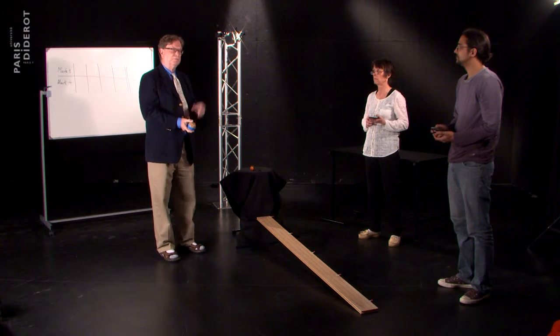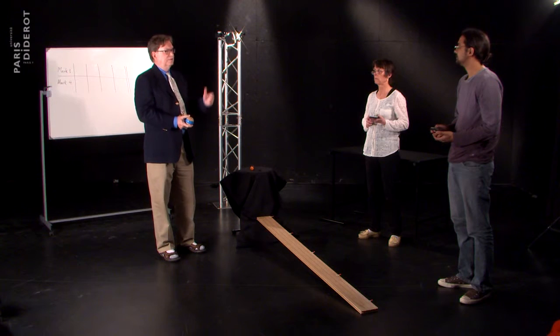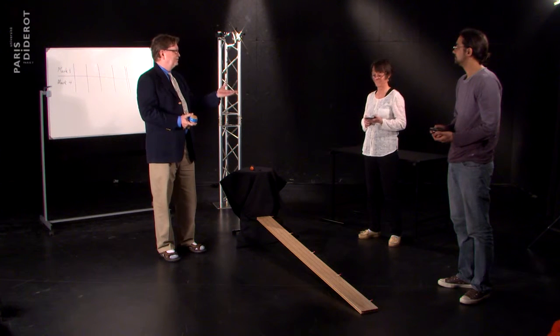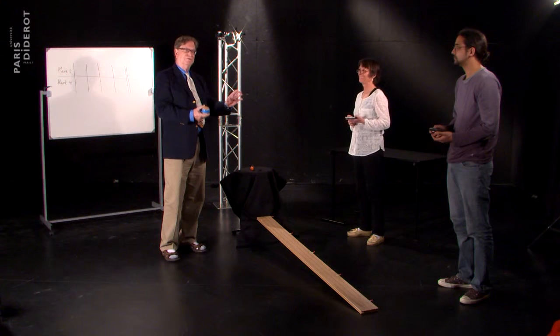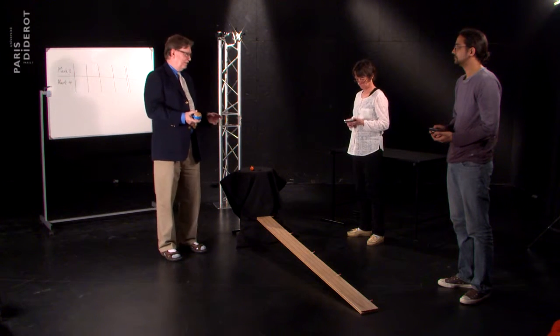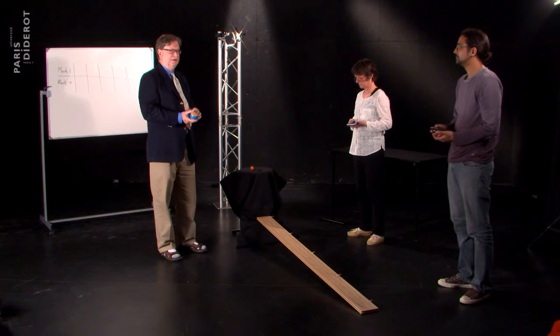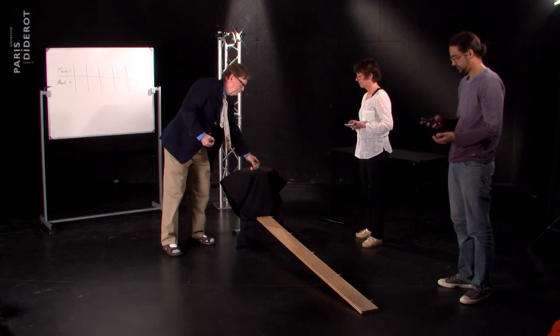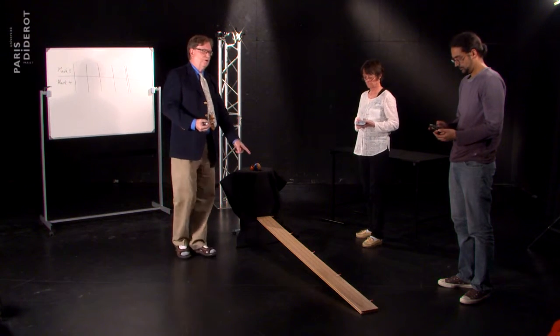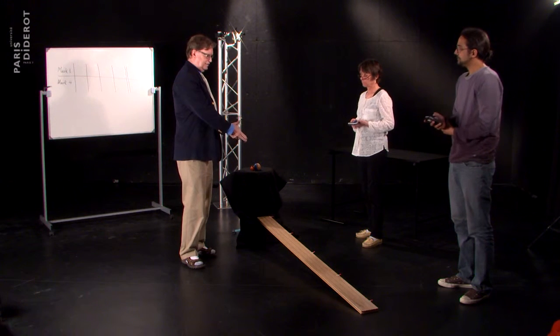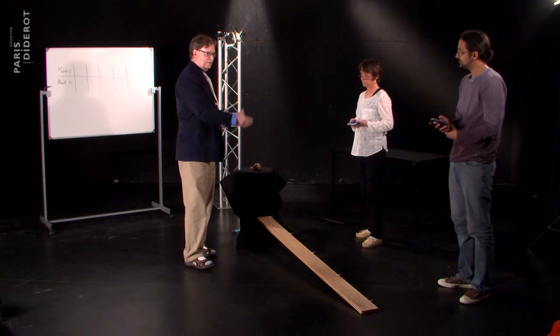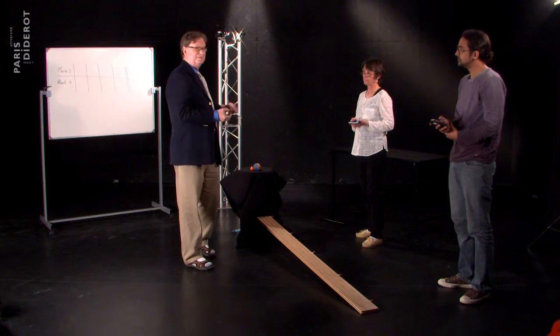So we're going to reproduce part of the experiment where he made that measurement. Instead of using a metronome, my assistants, Marie and Cherry, are using smartphones with very good timers on them. And we will roll the ball down the inclined plane the way Galileo did. And we'll measure how long it takes to get to the first mark and then the fourth mark. So we predict the time should be one unit here. It should be one more unit to get to the fourth mark.